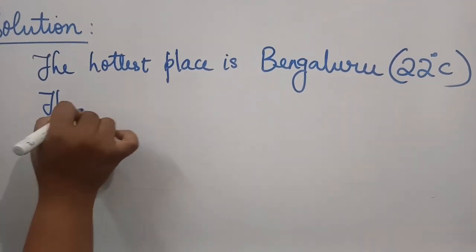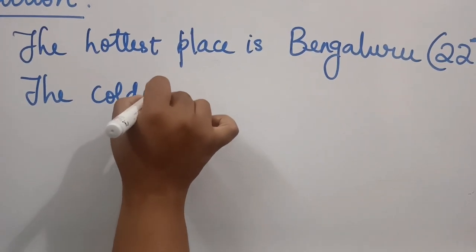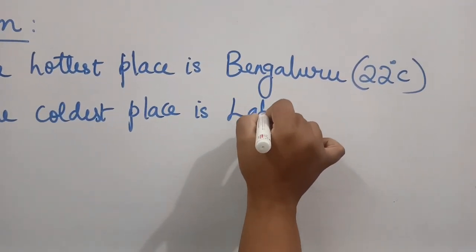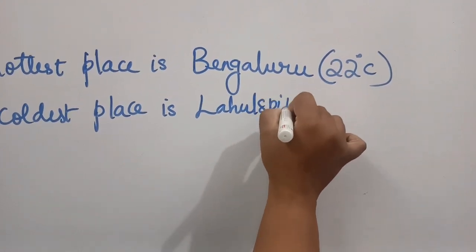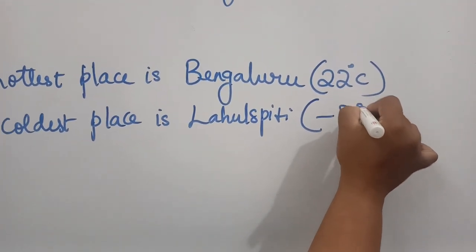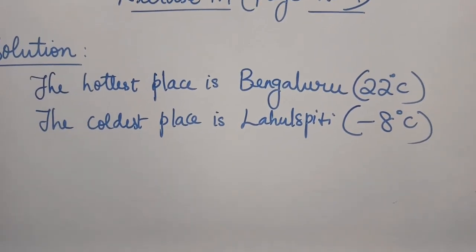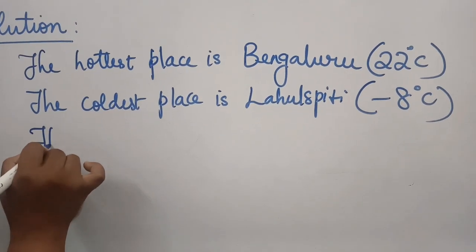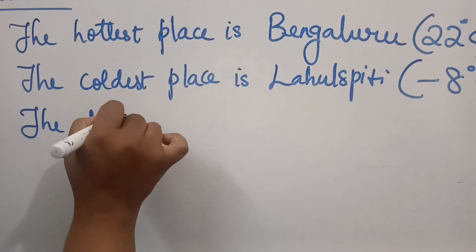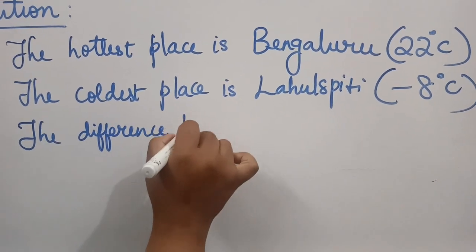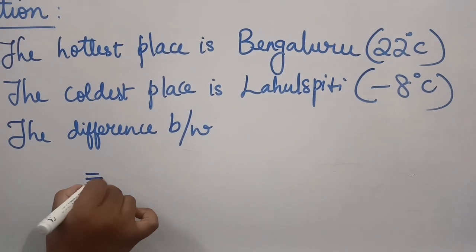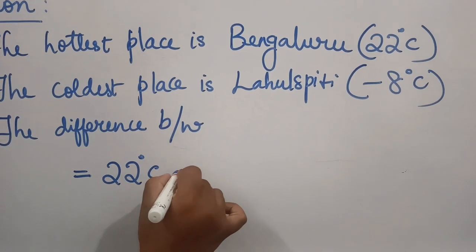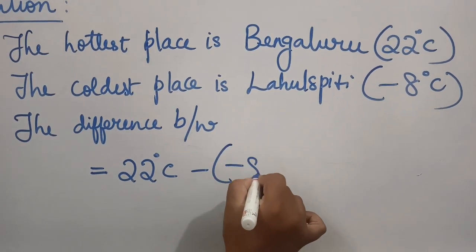The coldest place according to the number line is Laul Spiti. What is the temperature given? It's given as minus 8 degrees Celsius. So let's find the difference between them. The difference means you have to subtract: 22 degrees Celsius minus minus 8 degrees Celsius.